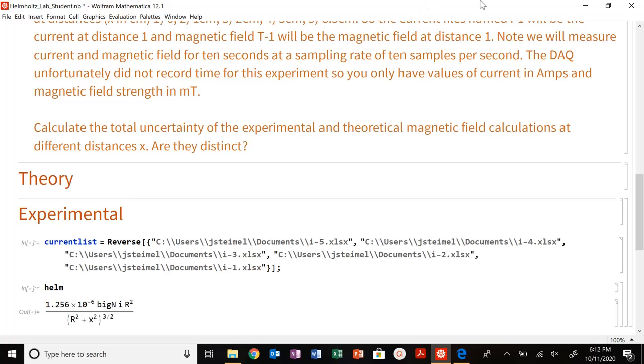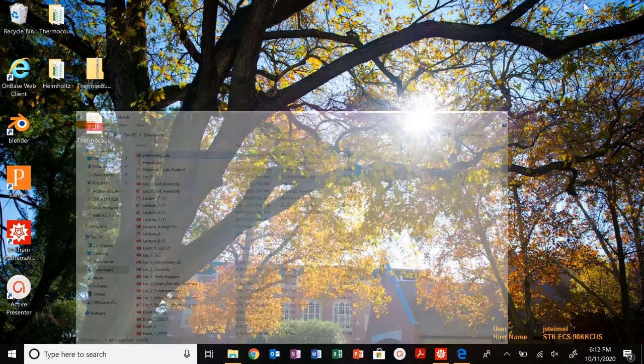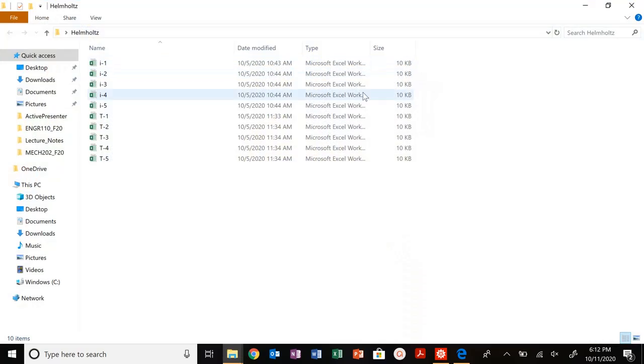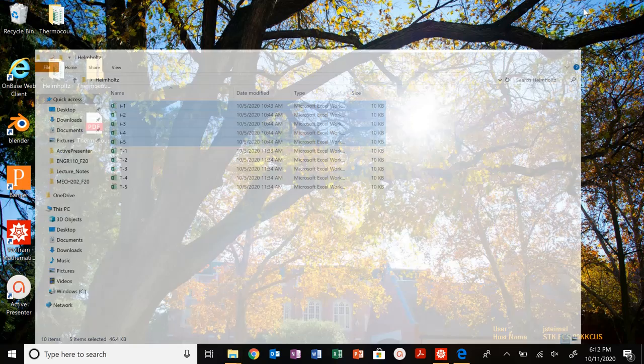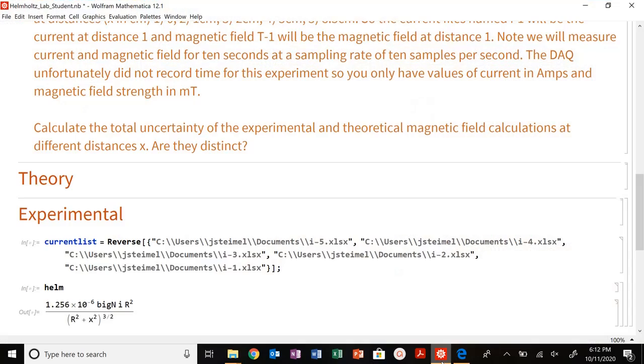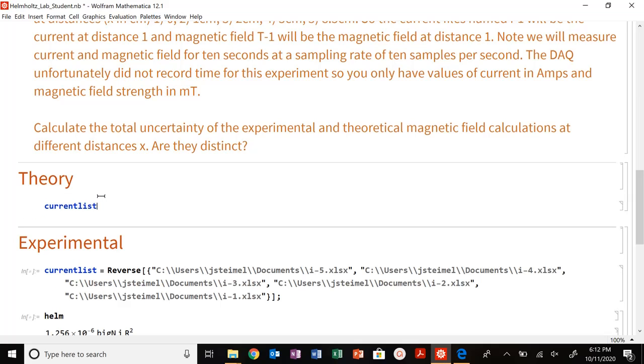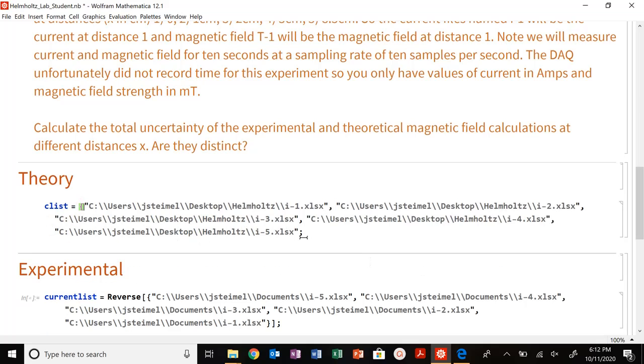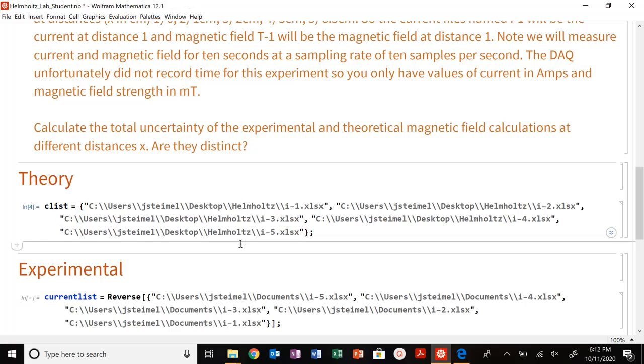We're going to do experimental first, but let's go ahead and pull our data in. So I've put it already on my, there we go. Helmholtz coils. So here's my current data. I'm going to do control C, but the current, as we mentioned, they're going to be used for the theoretical calculation.